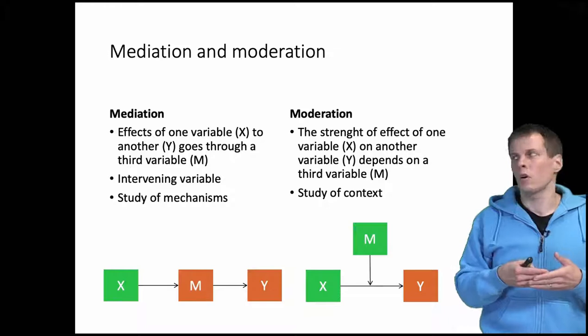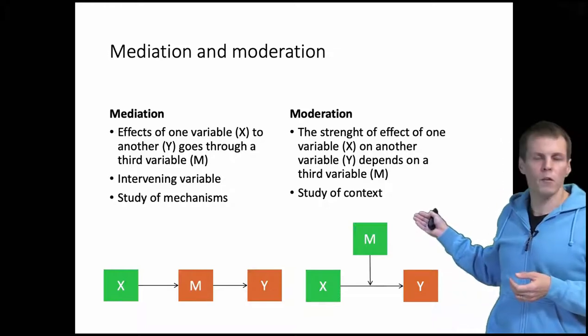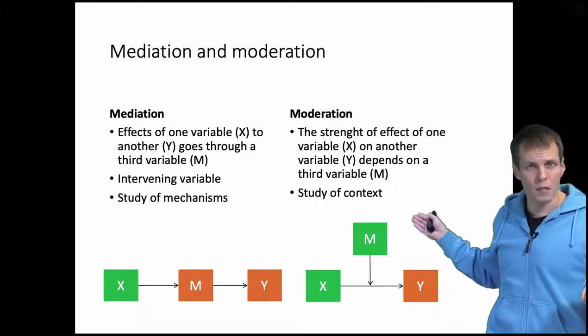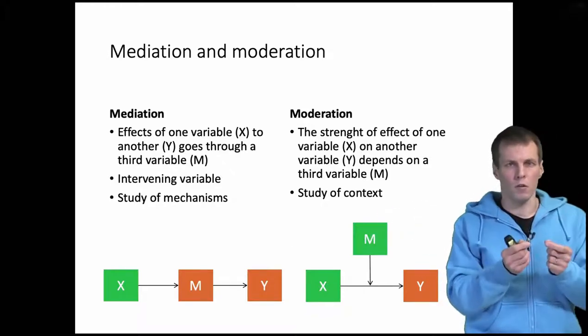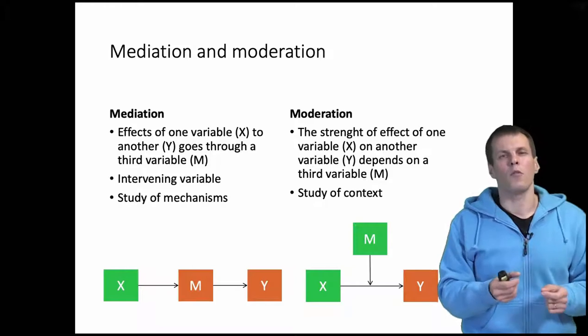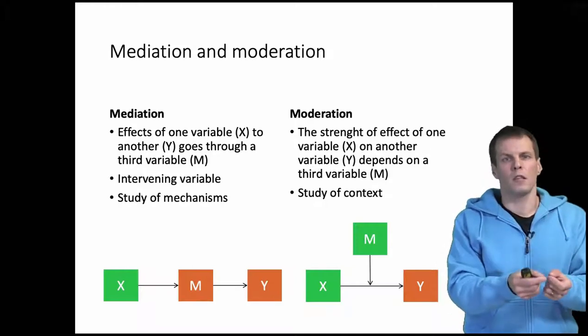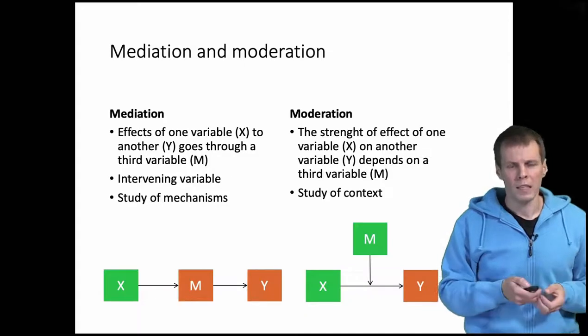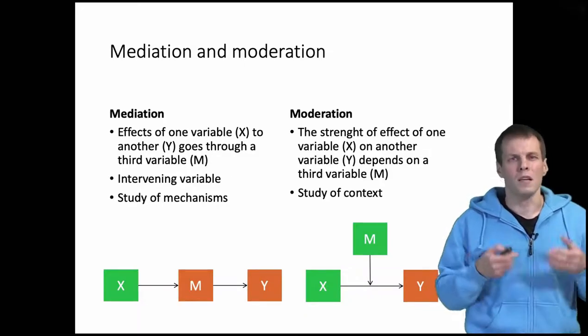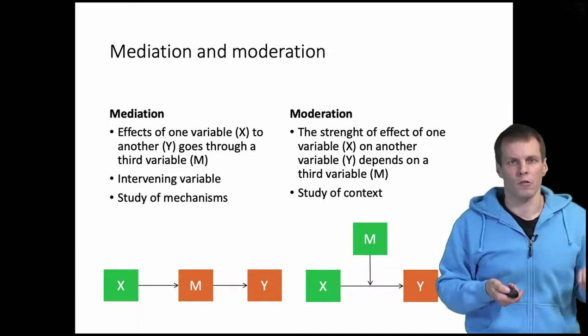So moderation models are useful for studying contexts. We can do these moderation models to understand under which conditions something happens and also what determines the strength of effects. Are there any contextual factors? Let's take a look at how these are estimated in the context of regression analysis.